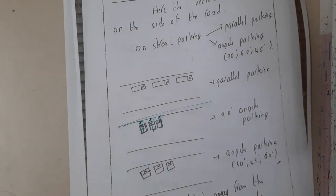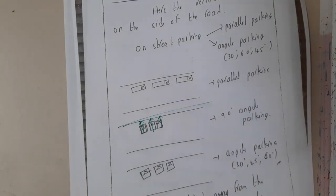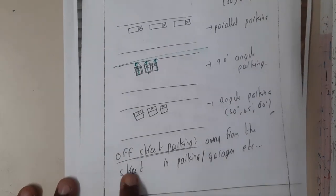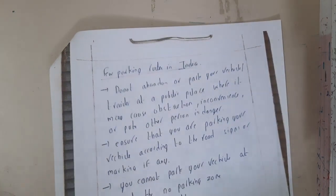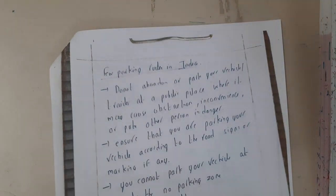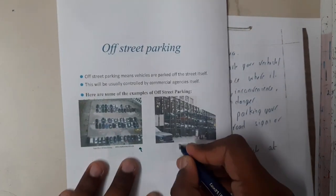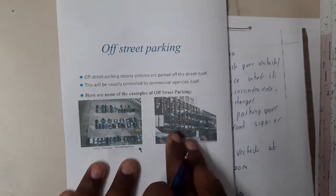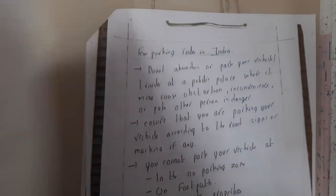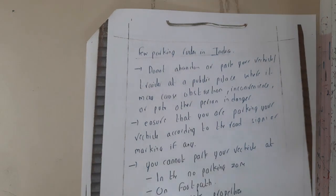Off-street parking means parking in garages or private places, away from the street. For example, a parking lot or a parking apartment — a multi-story structure where you can go floor by floor and park your vehicle.